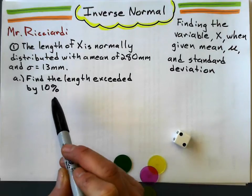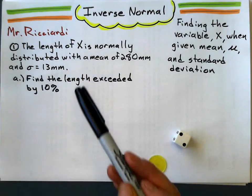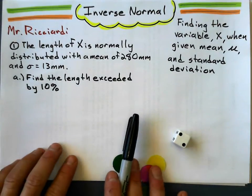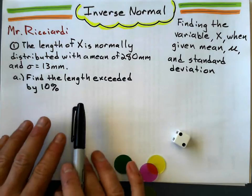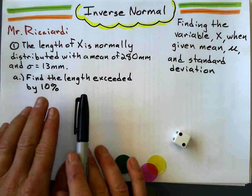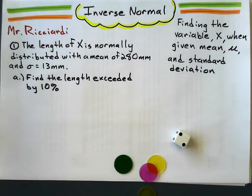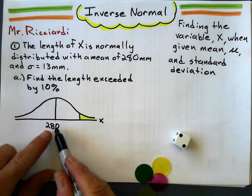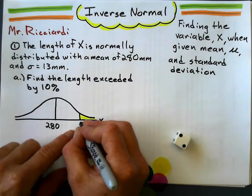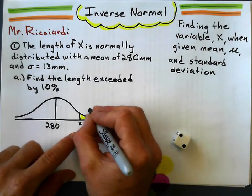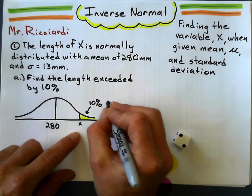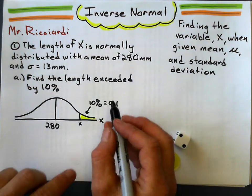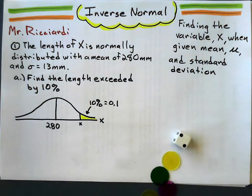Find the length that is exceeded by 10%. Let's see what this looks like. Let's draw a picture first of the normal distribution curve and look at the top 10%. So I've got my curve, I've got my mean of 280, and the top 10% I'll say is right here, and I want to find out what that value is there. So let's say that is the top 10%, which as a decimal is 0.1.